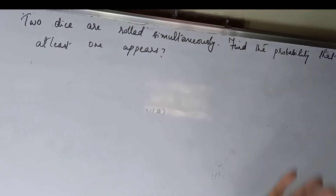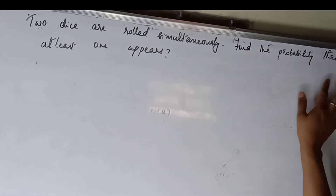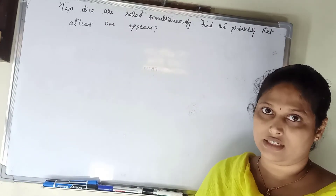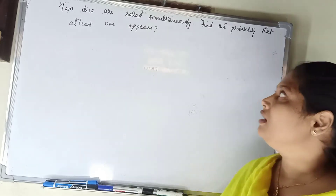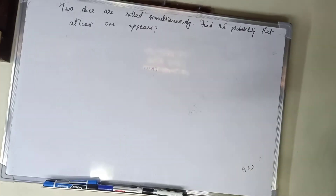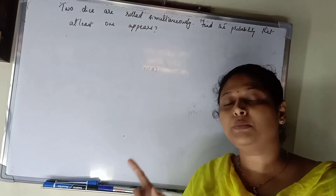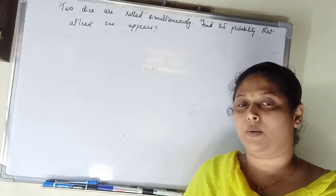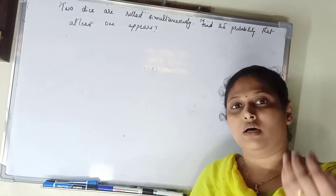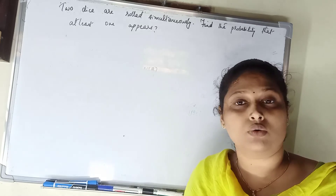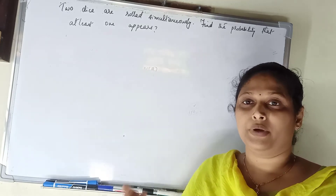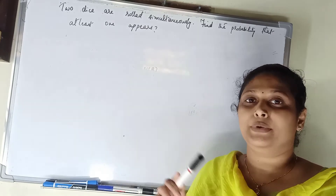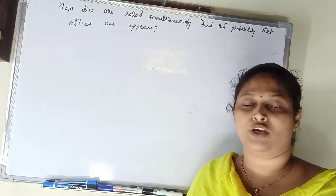New problem: 2 dice are rolled simultaneously. Find the probability that at least 1 appears. If you want to get a 1 on the first die, that is one chance. If you want to get a 1 on the second die, that is another chance. We apply the formula P(A∪B) = P(A) + P(B) - P(A∩B).